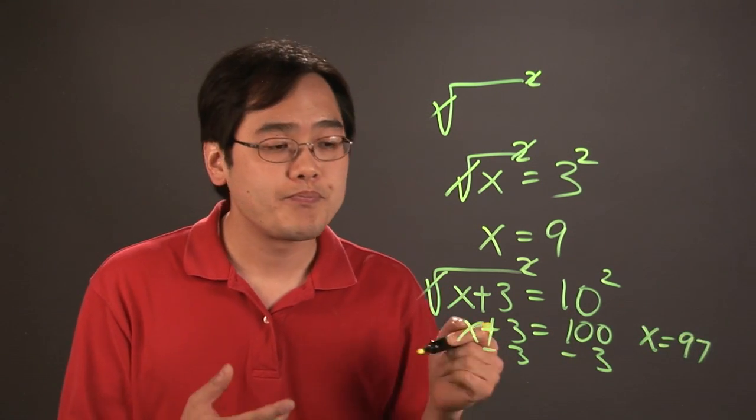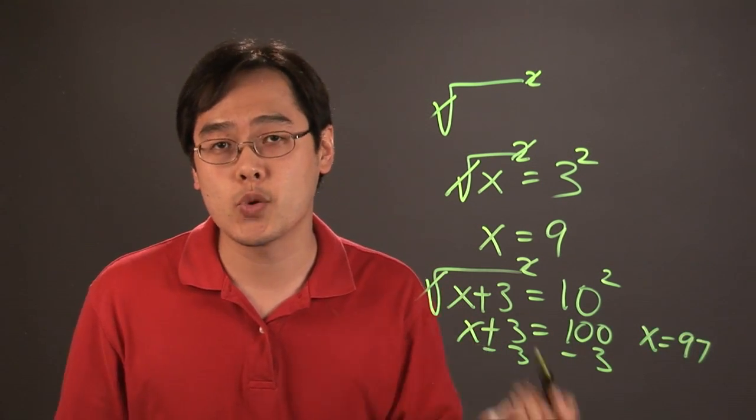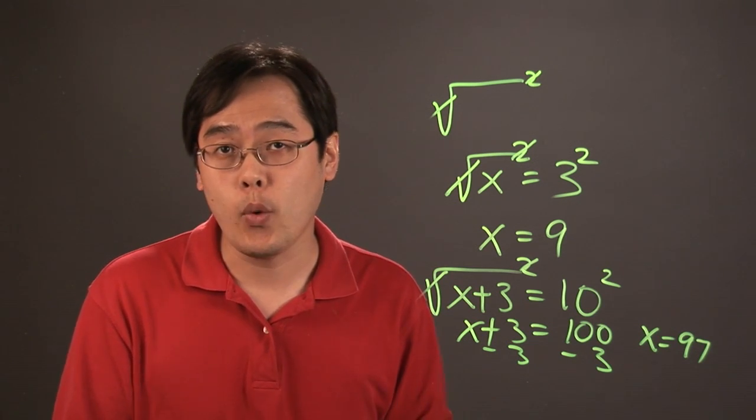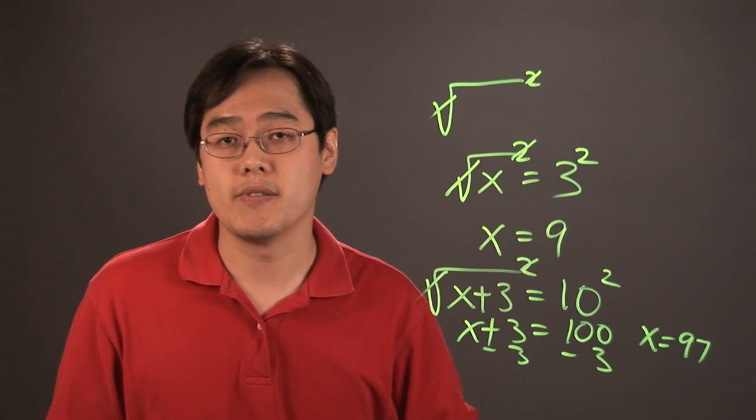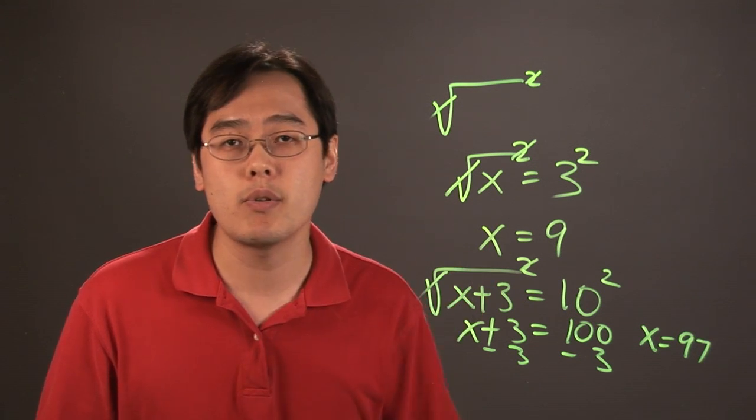But the bottom line is when you're canceling a square root, you have to square it. But because more often than not you'll be doing it in equations, you have to do it to both sides of the equation. So, I'm Jimmy Chang, and that's how to cancel a square root.